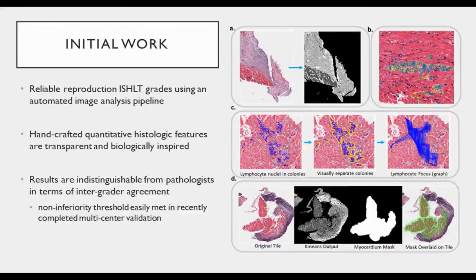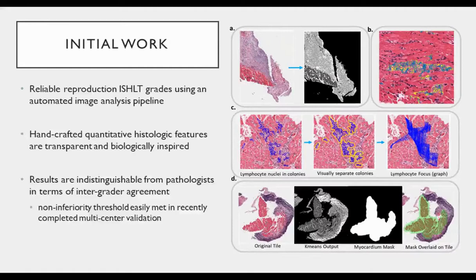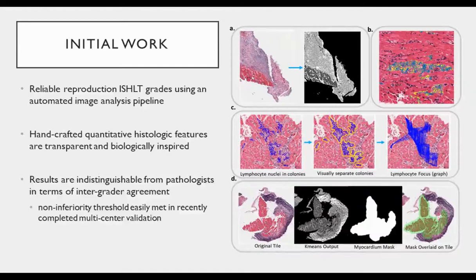Our group performed first-in-transplant work using computational histologic analysis. The goal of this preliminary work was to reproduce conventional ISHLT grades — to test out the tools in a new field and show their potential value to a sometimes skeptical clinical audience. The idea was that if we could reproduce ISHLT grades, we could develop something more reliable than one pathologist compared to another, at least attacking the issue of inter-rater agreement. We utilized a handcrafted feature engineering approach, starting with simple segmentation of H&E histology into three basic parts: dark gray for myocytes, light gray for interstitium and stroma, and white for all non-myocyte nuclei — usually lymphocytes.